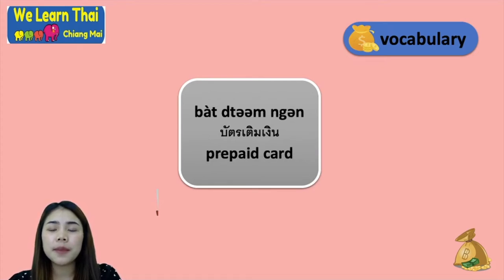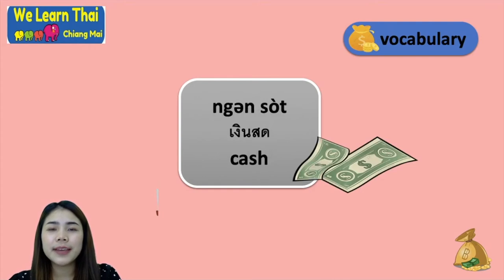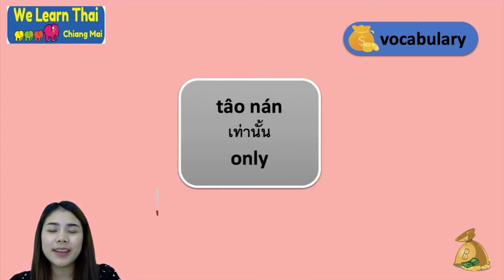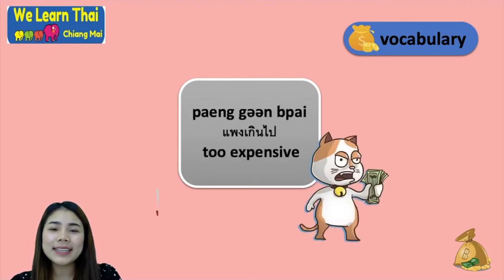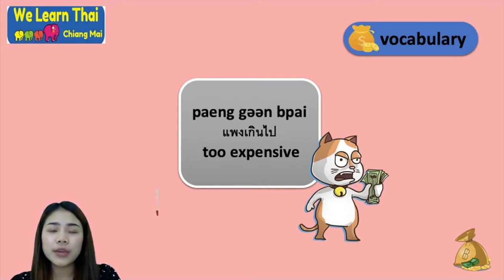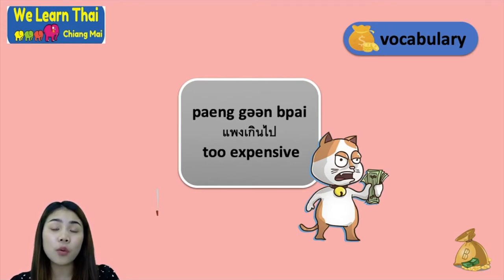Next, เท่านั้น means only, and เกินไป means too or too much. You can say แพงเกินไป, which means too expensive. You can also combine เกินไป with any adjective, like ร้อนเกินไป for too hot or สวยเกินไป for too beautiful.